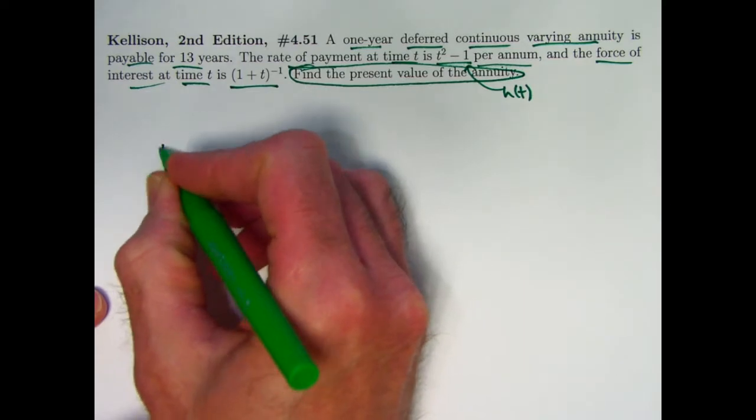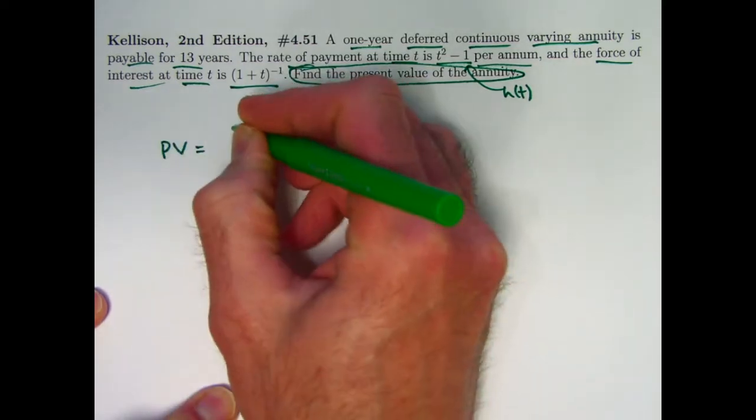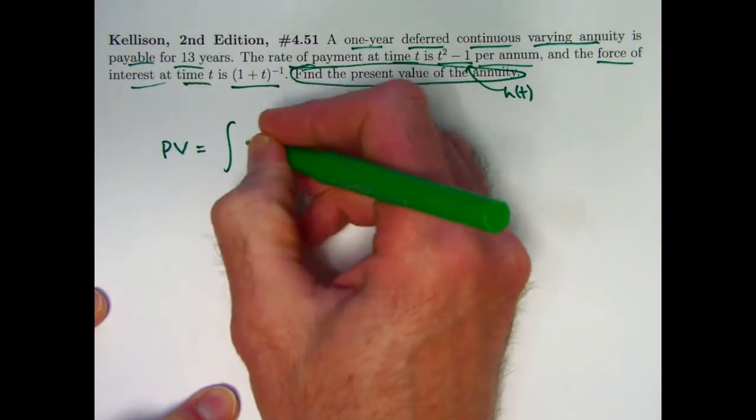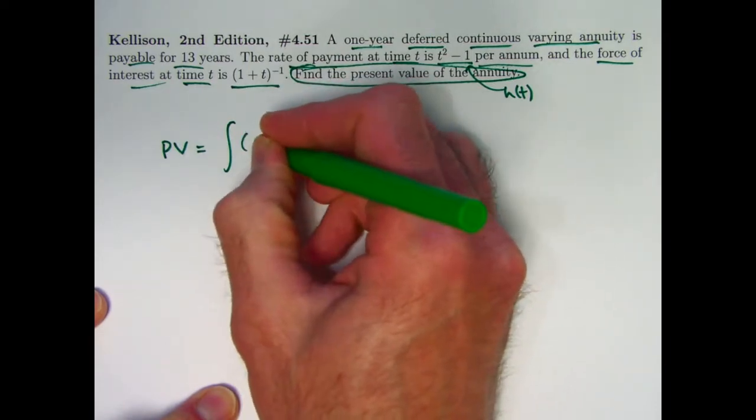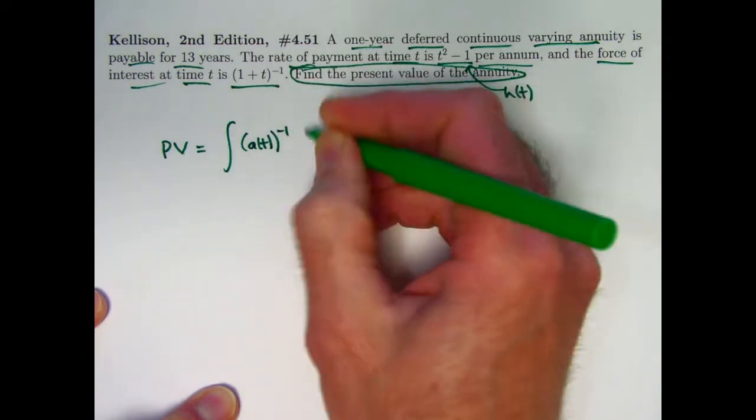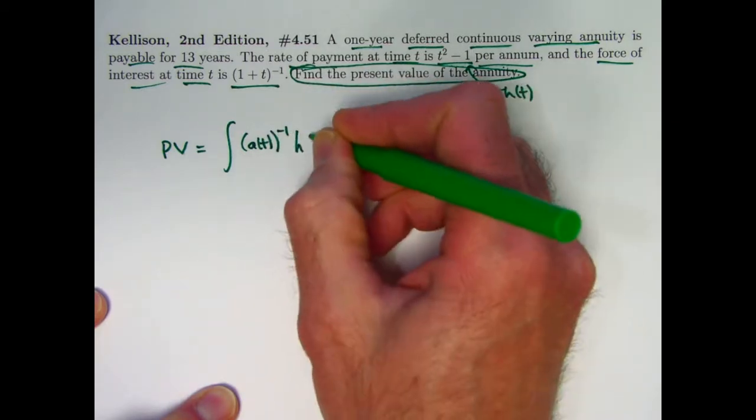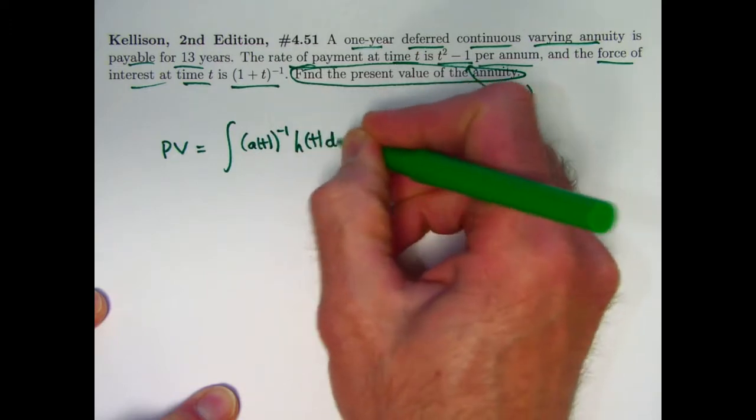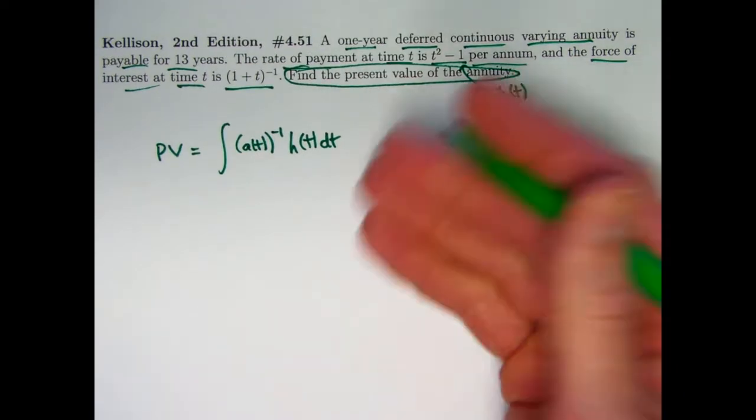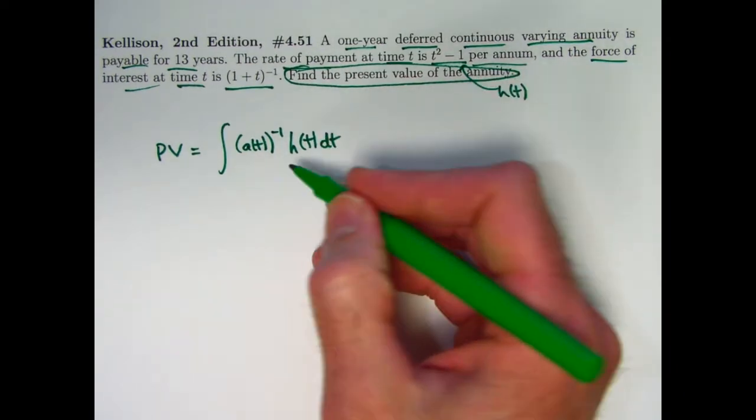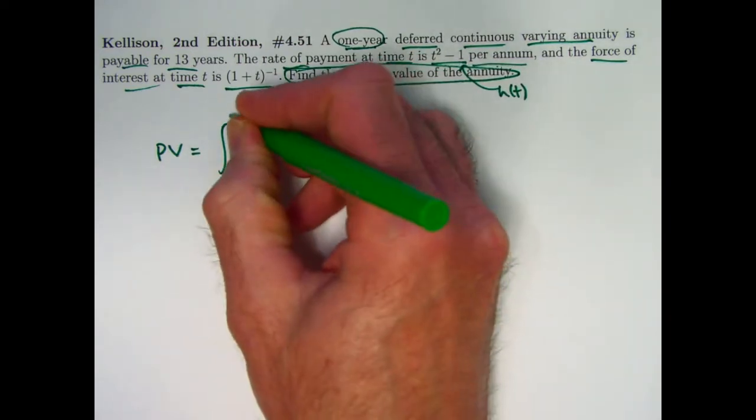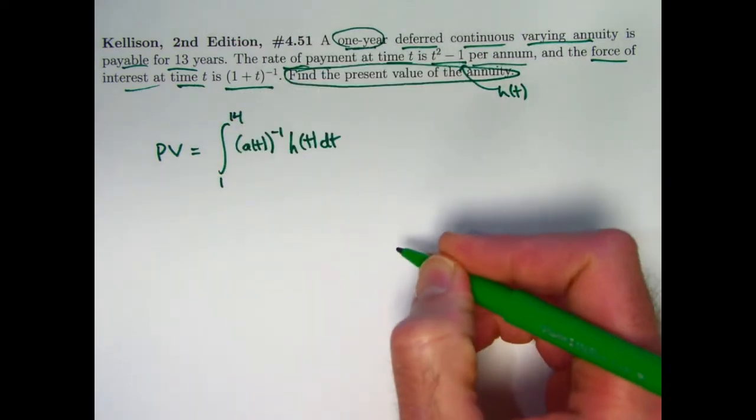So again we need the general formula. In general the present value of the annuity is going to be the discount factor, which is the accumulation function to the negative 1 power, times the cash flow. We're going to integrate that from 0 to when the cash flow ends, although from 0 to 1 in this case, because we have a 1 year deferral the cash flow will be 0. So we can really integrate just from 1 to 14 in this situation.